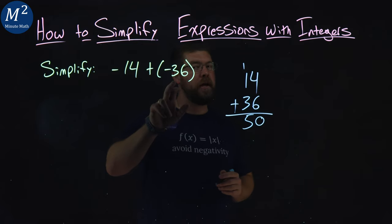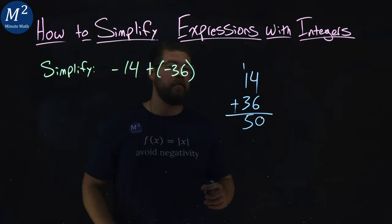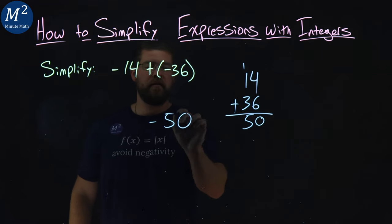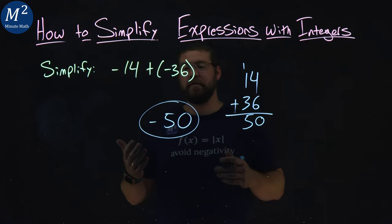But remember, they're both negative. So negative 14 plus a negative 36 is a negative 50, and there we have it. There's our answer.